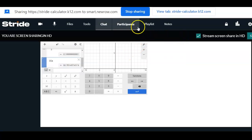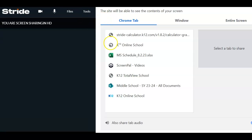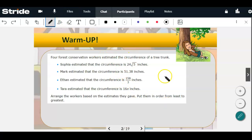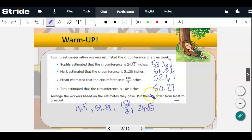We're going to go back to our file and look at those numbers again and compare them. This one was 53.67, this one is already a decimal 51.38, we have 52.67 and 50.27. Range them from least to greatest. So 16 pi is the smallest, 51.38 is next, 158 over 3, and the largest one is 24 square root of 5. That was a review of ordering real numbers.